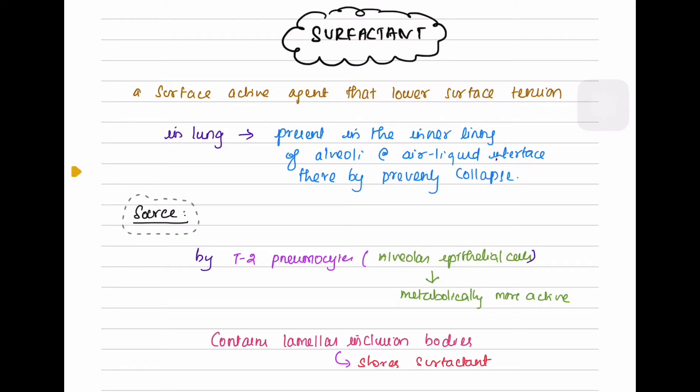Source of surfactant: It is produced by type 2 pneumocytes, or type 2 alveolar epithelial cells, which are metabolically more active. They contain lamellar inclusion bodies which store surfactant.